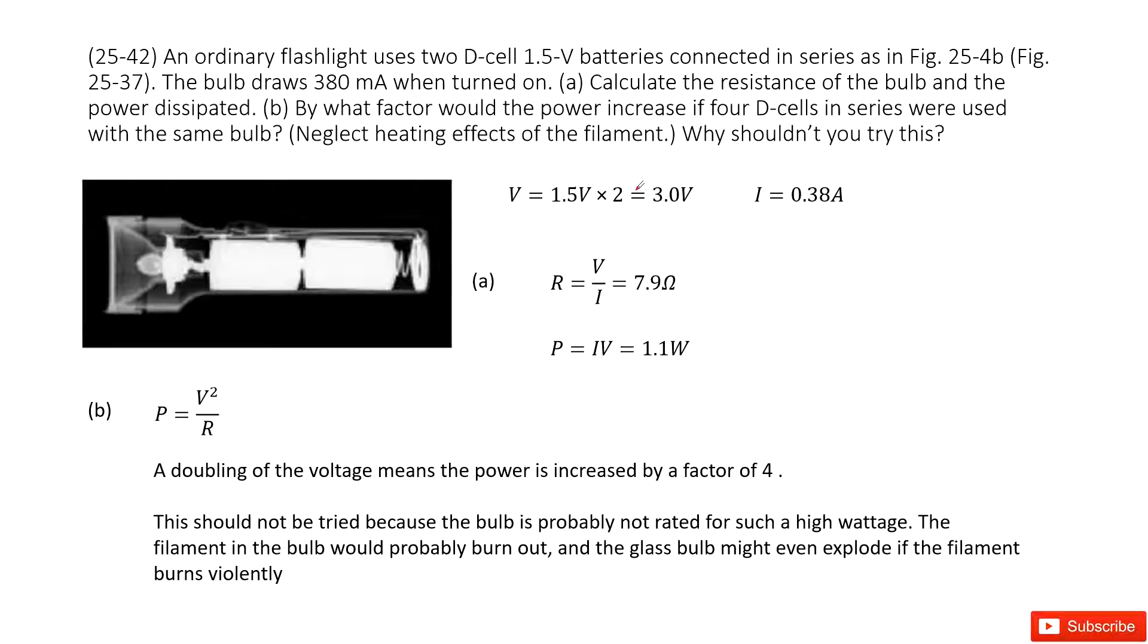So we can see we have an ordinary flashlight, and then it uses two batteries connected in series. For each battery it's 1.5 volts. So the total voltage should be 1.5 times 2, 3 volts.